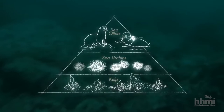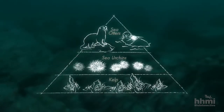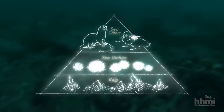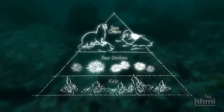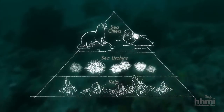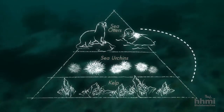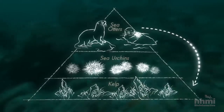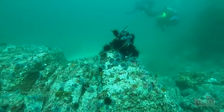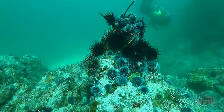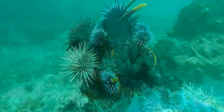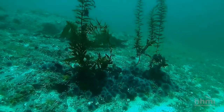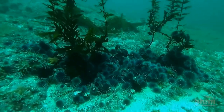Paine called these cascading effects of one species downward upon others trophic cascades. A trophic cascade is when you have an apex predator controlling the distribution of resources, leading to cascades of indirect effects — lots and lots of indirect effects. Fewer sea otters means more sea urchins, which means fewer kelp. Every coastal species is probably impacted in one way or another by the presence or absence of kelp.